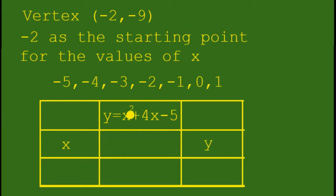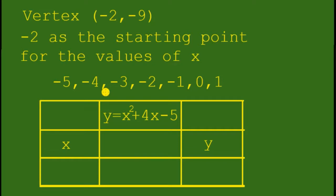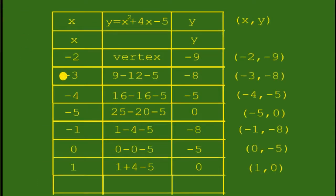We will use this table to find the values of y using these values of x. In the table we have the vertex ordered pair negative 2 and negative 9. To the left we use negative 3, negative 4, and negative 5, and to the right we use negative 1, 0, and 1.